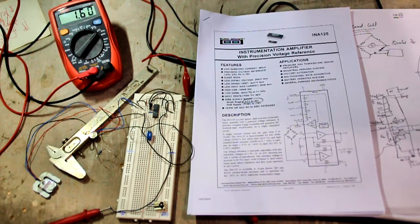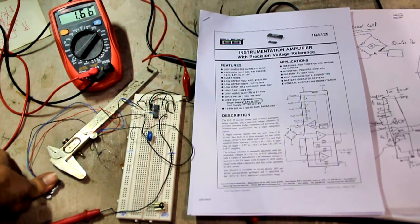Now if you had a load cell that can measure five kilograms and you put your finger on it and it gave you a reading that would make sense, but you can see that I'm getting some reading in millivolts even with my thumb.